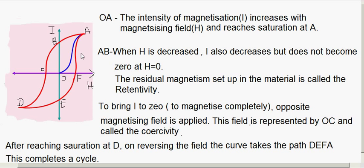Now let's see what happens when you decrease H. When H is decreased, I also reduces, as shown by curve AB. Upon decreasing H, I also reduces, but at point B, H is 0 yet I has not reduced to 0. That means the intensity of magnetization is lagging behind the magnetizing field — though H reduces to 0, I does not become 0 at B.